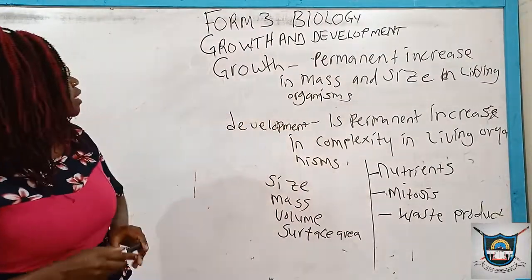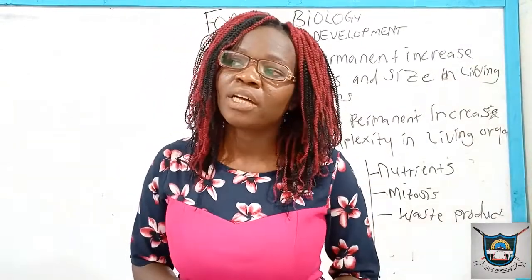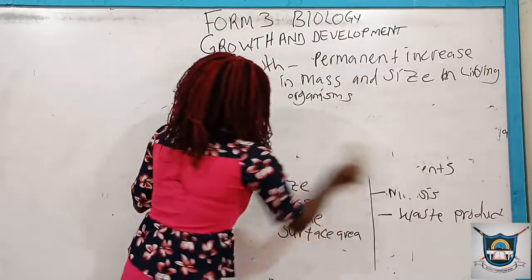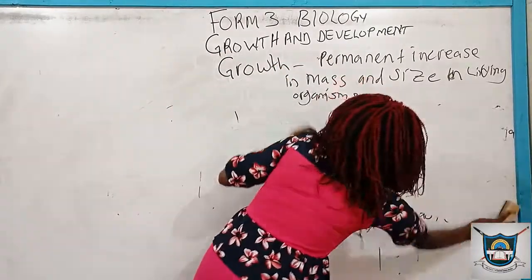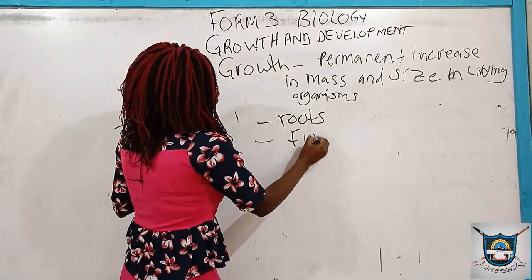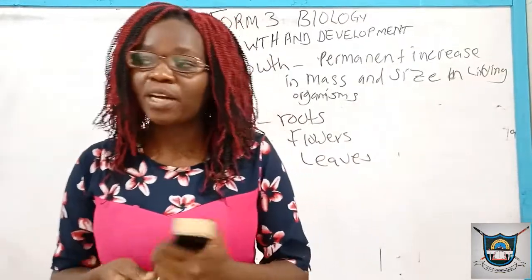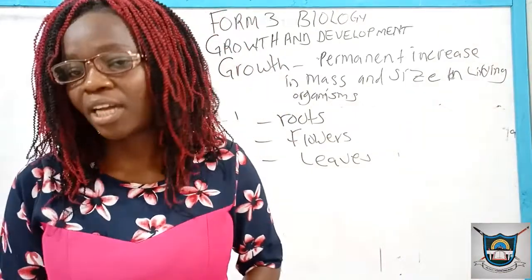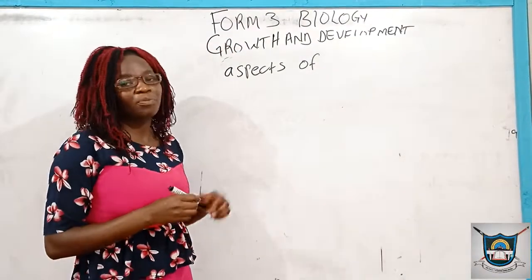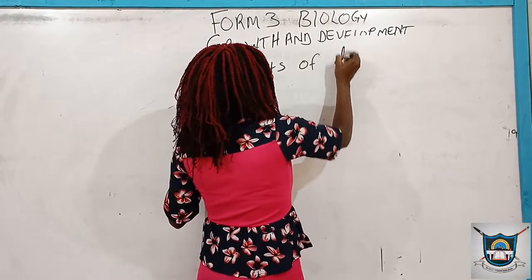But in development, we might not be able to measure it using various parameters. But in plants, we can measure development by observing various factors. We observe various factors like the formation of fruits in plants, flowers, and also the leaves. So these are the factors that can help us determine whether our plants are developing or not.